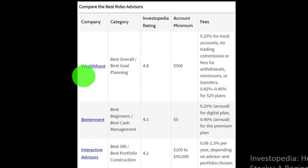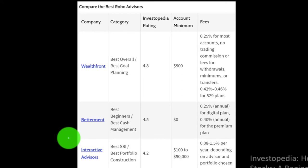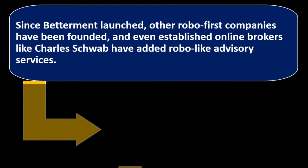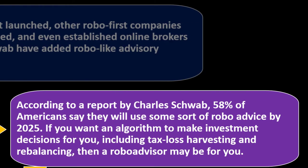Investopedia's top robo advisors include Wealthfront — rated best overall and best global — Betterment, Interactive Brokers, M1 Finance, Personal Capital, Merrill Guided Investing, and E*TRADE. Since Betterment launched, other robo-first companies have been founded, and even established brokers like Charles Schwab have added robo-like advisory services. According to Charles Schwab, 58% of Americans say they will use some sort of robo advice by 2025.